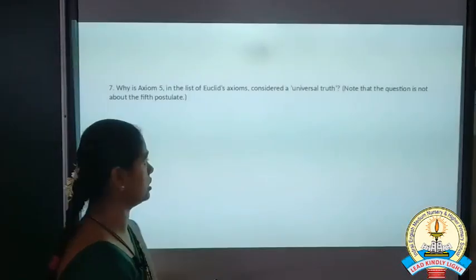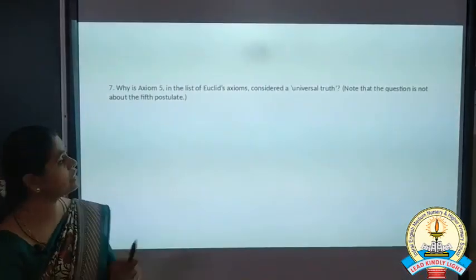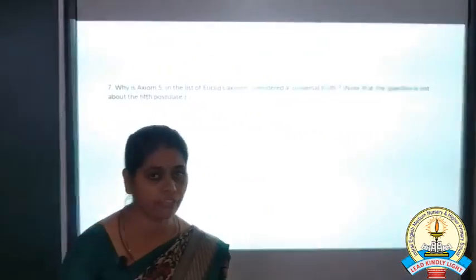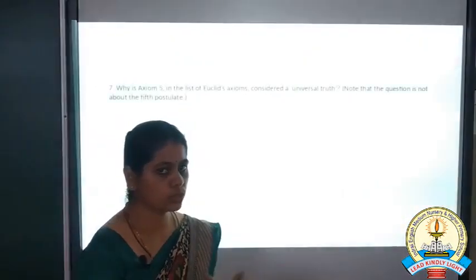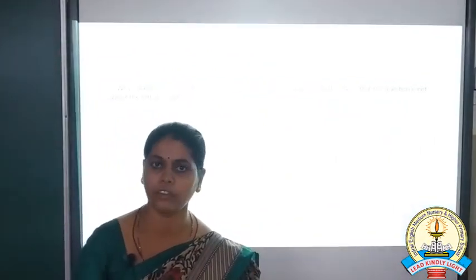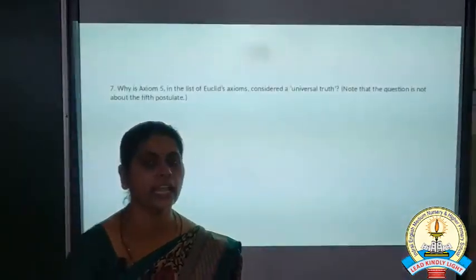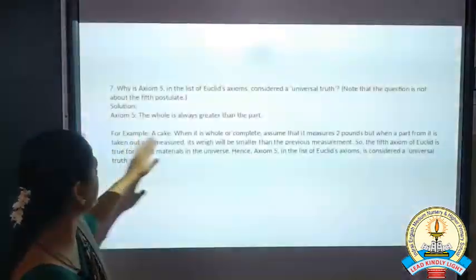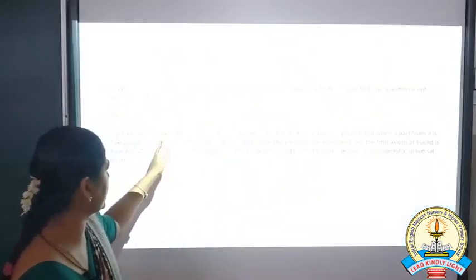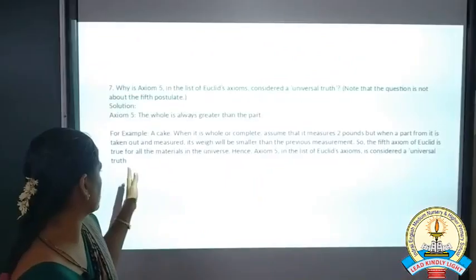The last question: why is Axiom 5 called a universal truth? Axiom 5 states the whole is greater than a part. If you take one paper, one chalk piece, or one dosa — one whole thing — and divide it into different parts, the whole is always greater than any one part. If you take a cake and divide it into parts, the whole cake is always greater than the part. So this is called a universal truth.